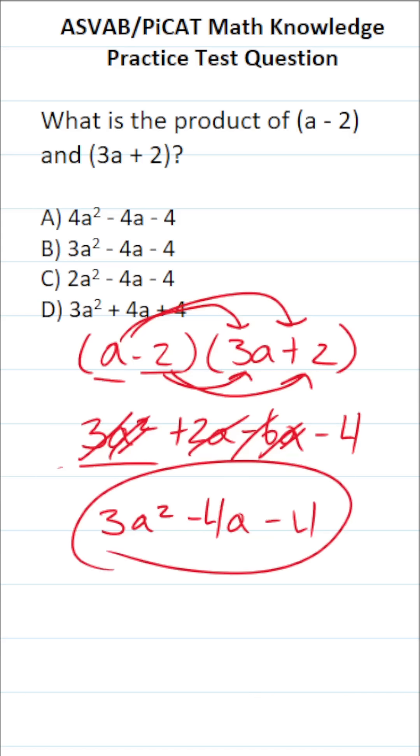So this is the result when we multiply these two polynomials together. It's 3a squared minus 4a minus 4, which is answer choice B.